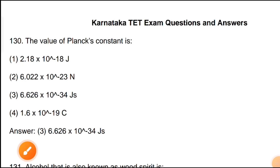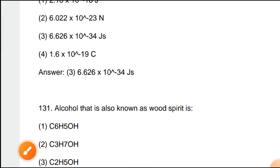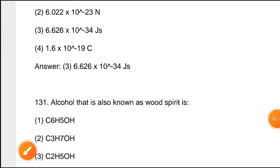TET exam question and answer, question number 132 to 137. The value of Planck's constant: option C is the correct answer — 6.626 × 10⁻³⁴ joule-seconds.